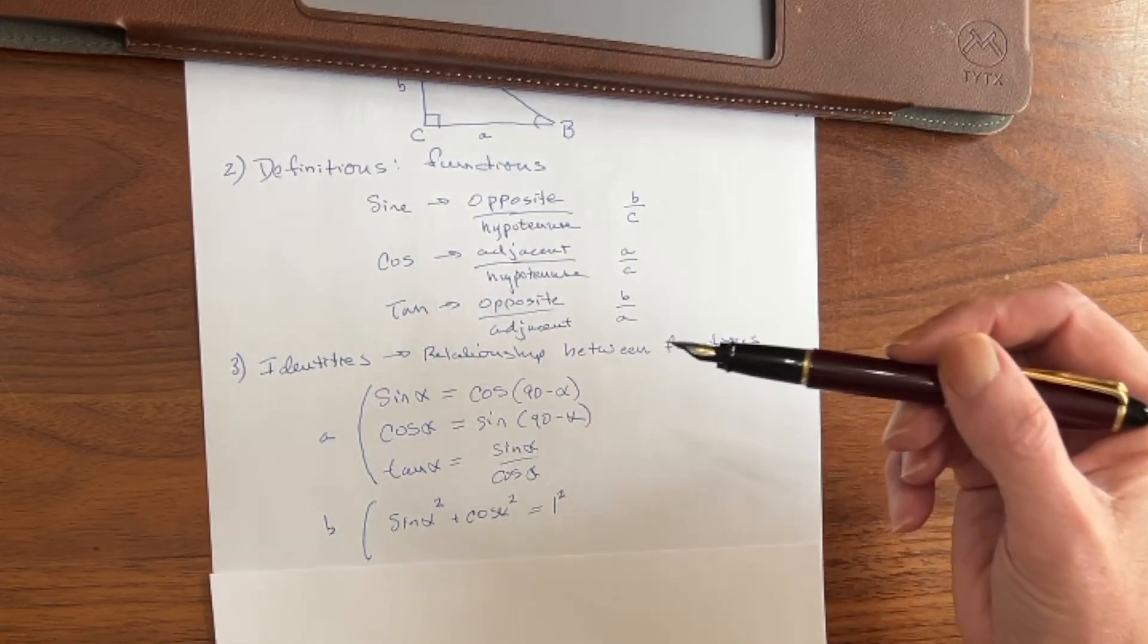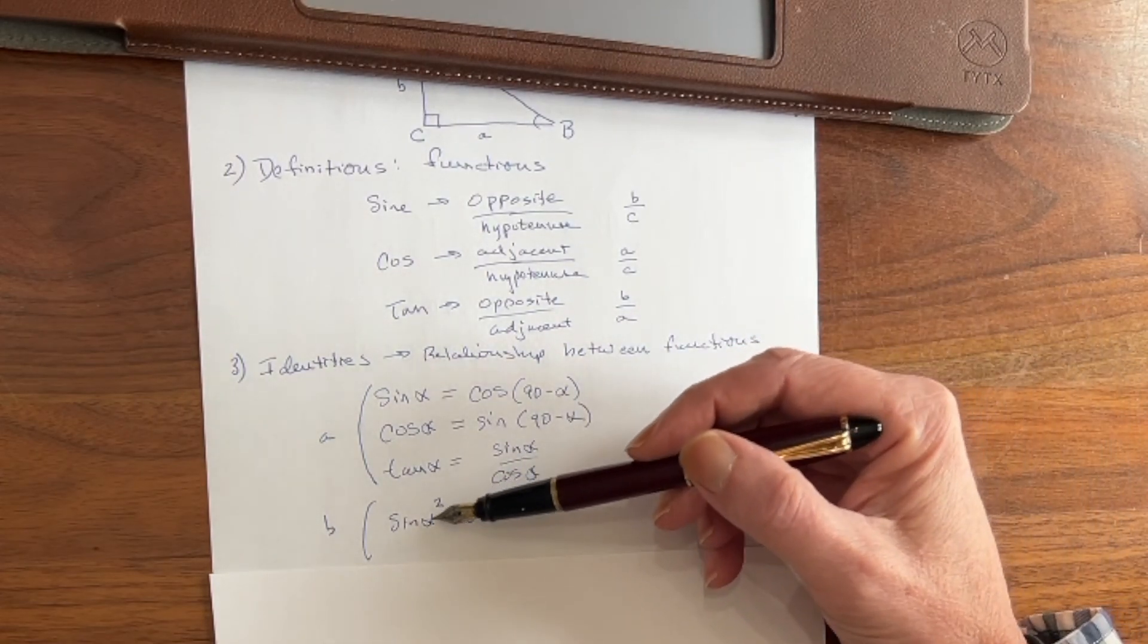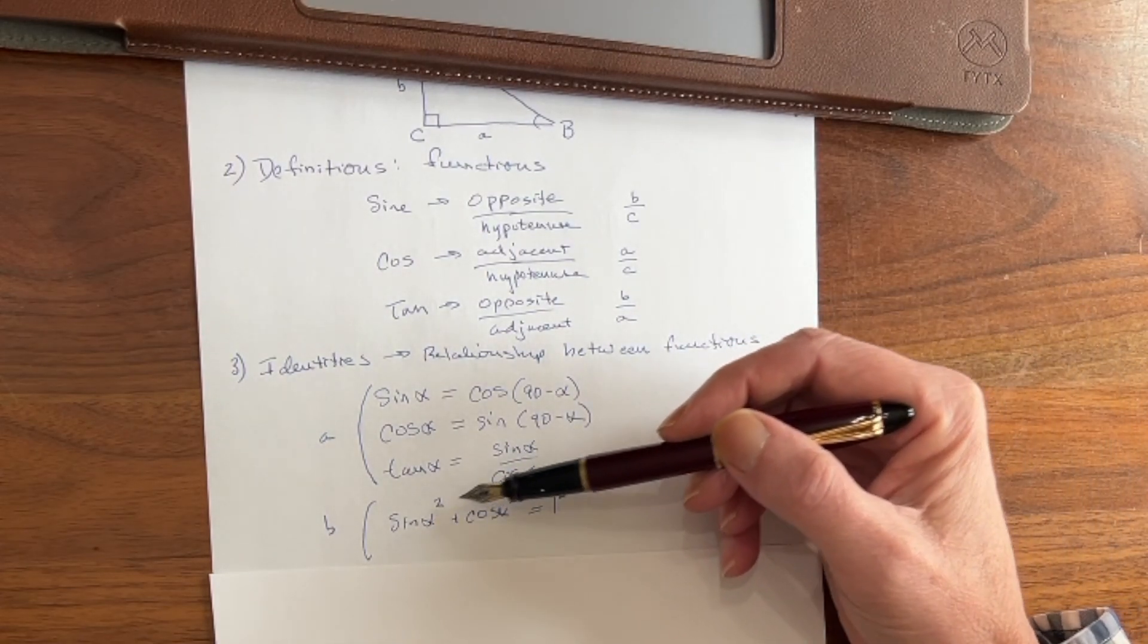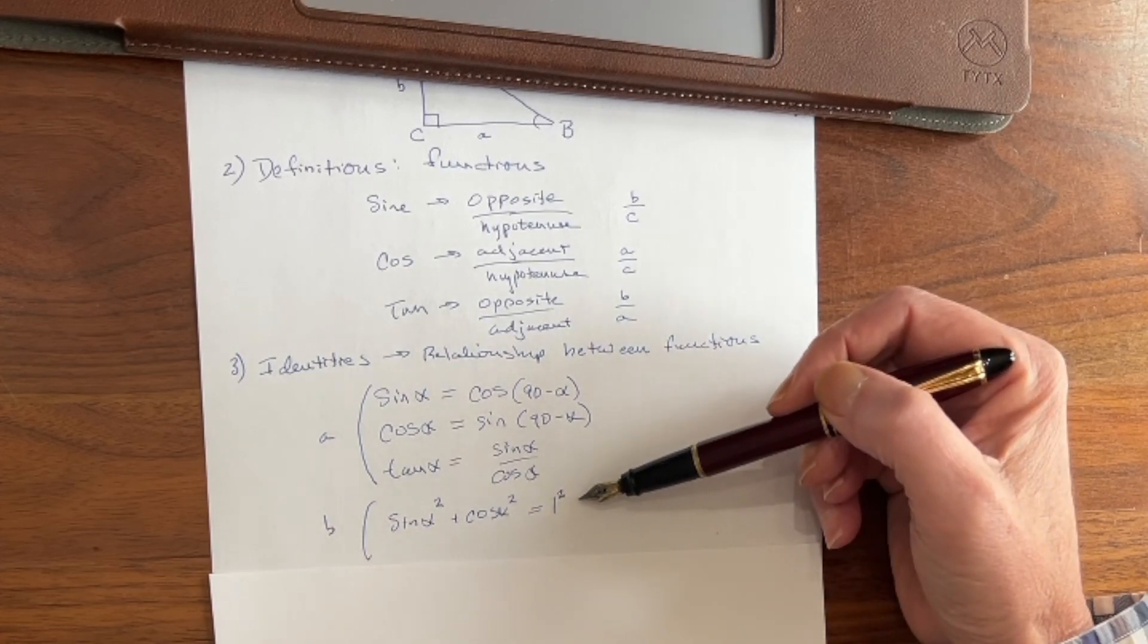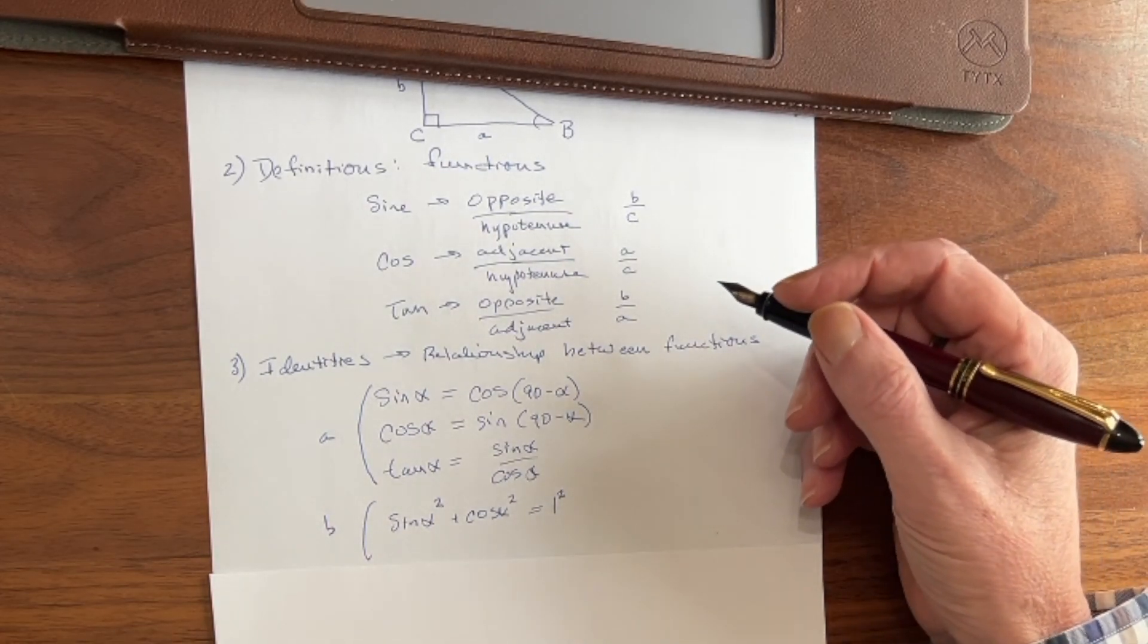Now another very important identity is called a Pythagorean identity, and that is that the sine squared of alpha plus the cosine squared of alpha equals the square of 1. And those are the main identities that you need to worry about.